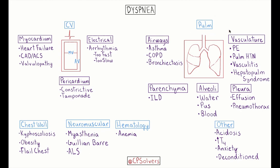Our next bucket of causes of dyspnea are pulmonary etiologies. I find an anatomical approach to be quite useful here, and I always like to start with the airways themselves — examples being asthma, COPD, or bronchiectasis, which is thickened airways from infection and inflammation. Next, we have the parenchymal category, which is a broad category; one example is interstitial lung diseases.